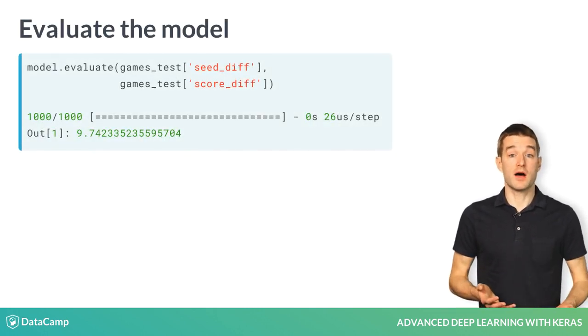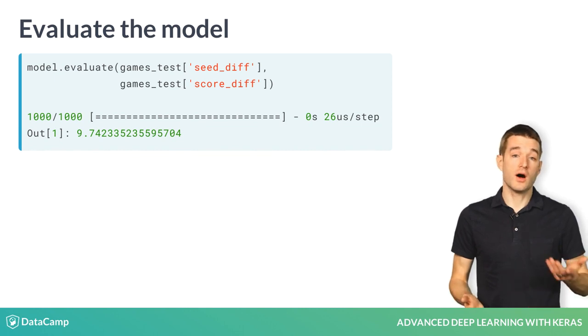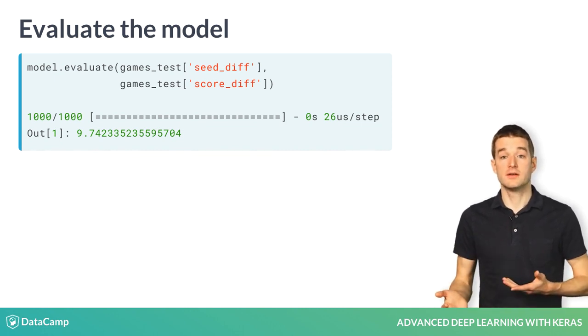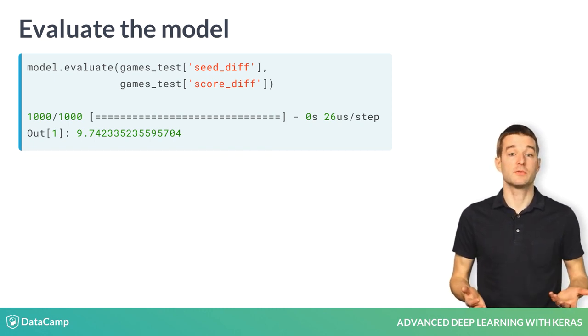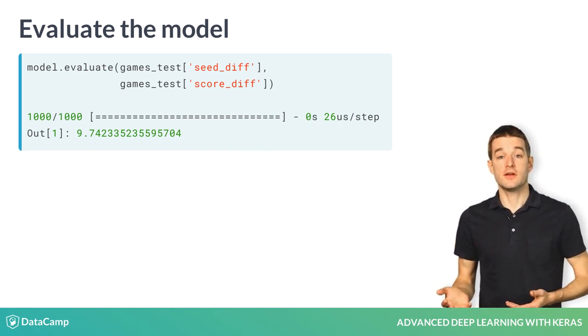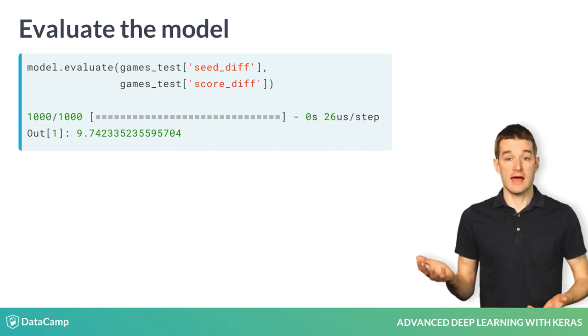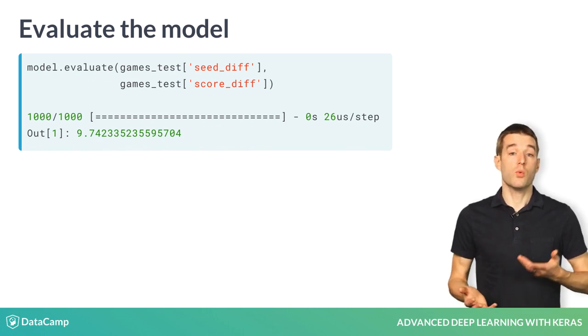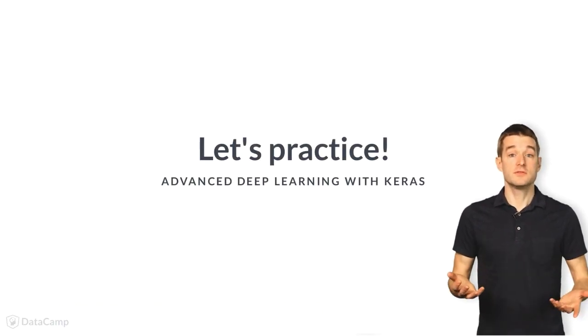Once you've fit a model, it is useful to evaluate it on new data. Even if you use a validation set during training, you often want to do a second check using a new dataset to make sure the model is predicting as expected. To do this, you can use the evaluate method of the model and pass it the X and Y variables from the new data. When you do this, Keras will report error metrics on the new data. Time for you to fit the model.